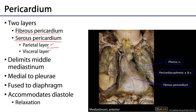Between the parietal and the visceral layer is the pericardial cavity. In total, the pericardium defines the middle mediastinum. Anything anterior to the pericardium is the anterior mediastinum, and anything posterior to the pericardium is the posterior mediastinum, but wherever the pericardium is, is the middle mediastinum.